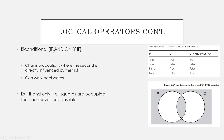The biconditional, or logical 'if and only if,' chains propositions where the second proposition is directly influenced by the first, and this one can work backwards. For example: 'if and only if all squares on our game board are occupied, then no more moves are possible.'